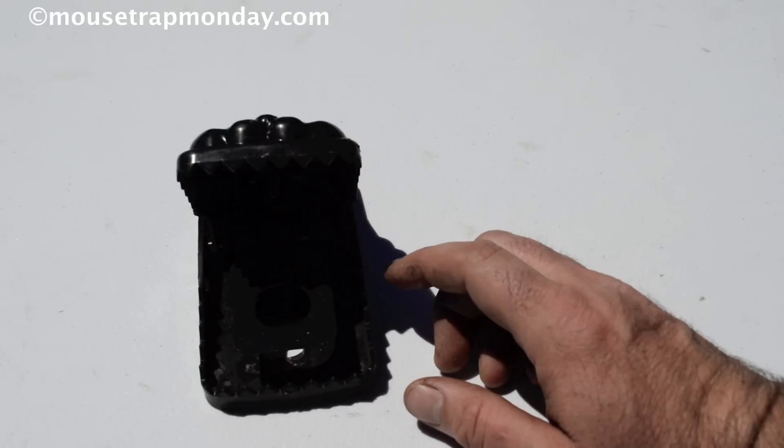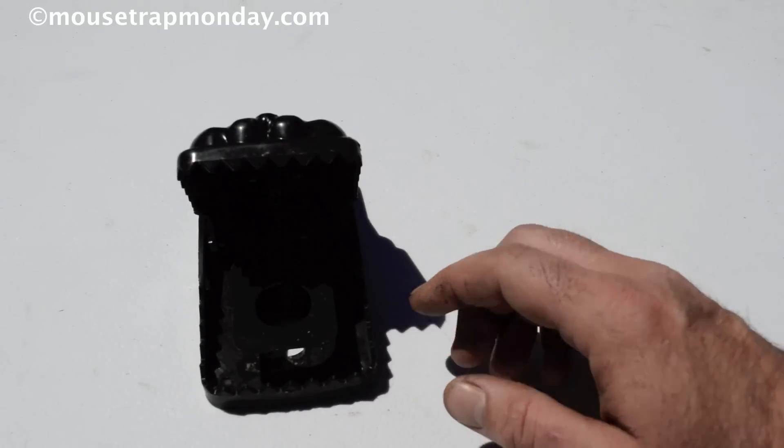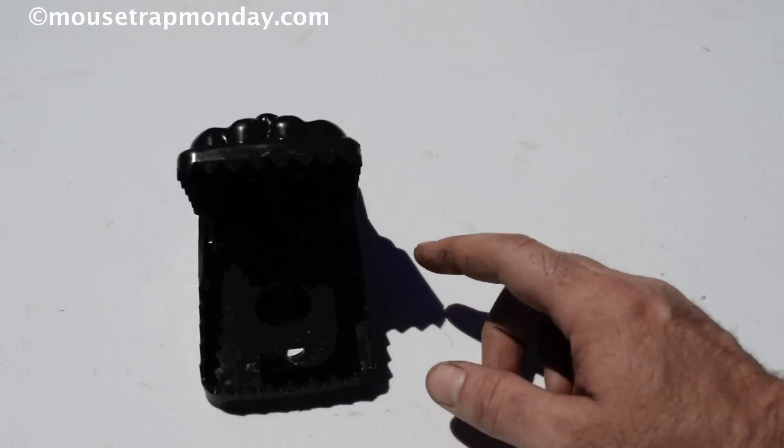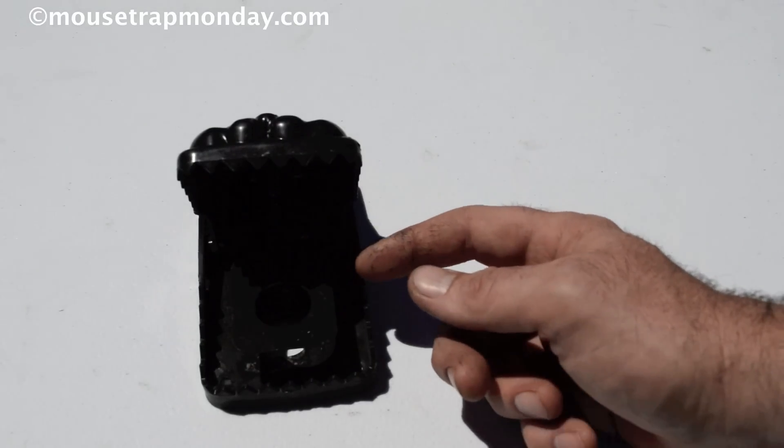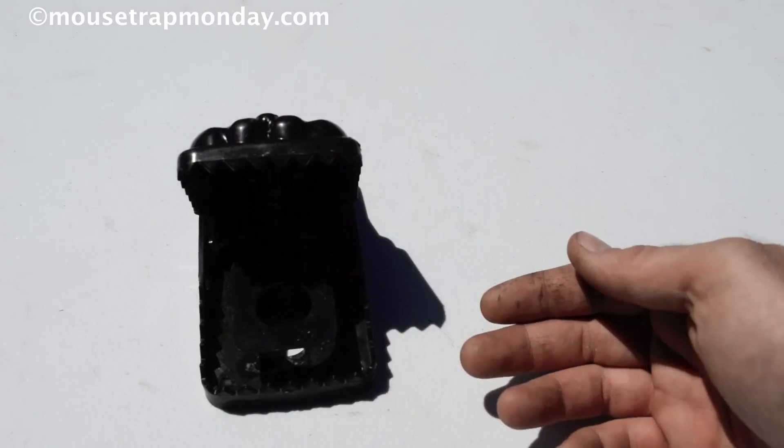But larger rodents such as squirrels and rats, not so much. I've had squirrels and rats put their feet on there and the jaws came down and they were able to just pull those out. And the real telling video was when the rat put its entire head in there, those jaws came down and it was able to simply pull out and run away.